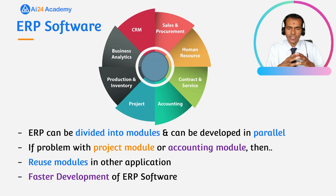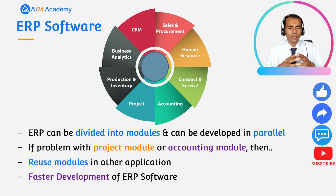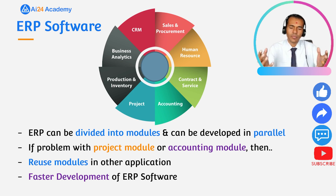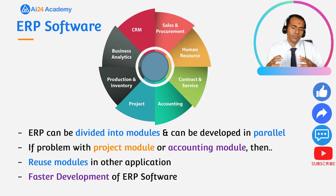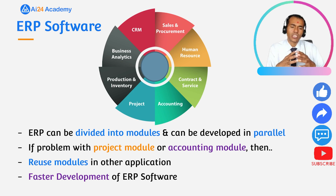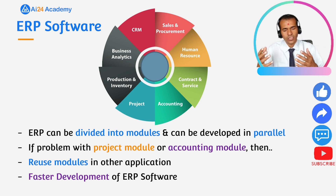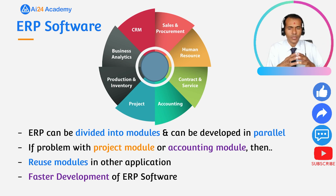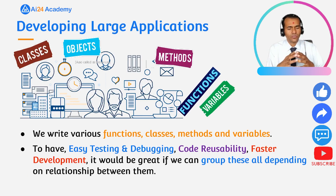We already know that in an ERP system there are different modules like accounting, project management, human resource management, sales, procurement, and business analytics. Different module development can be assigned to different team members or teams, enabling parallel development. If there is an issue with one module, like the project or accounting module, other modules are unaffected and individual modules can be easily tested and debugged. A common module like accounting can also be reused in other applications such as banking or credit society software.